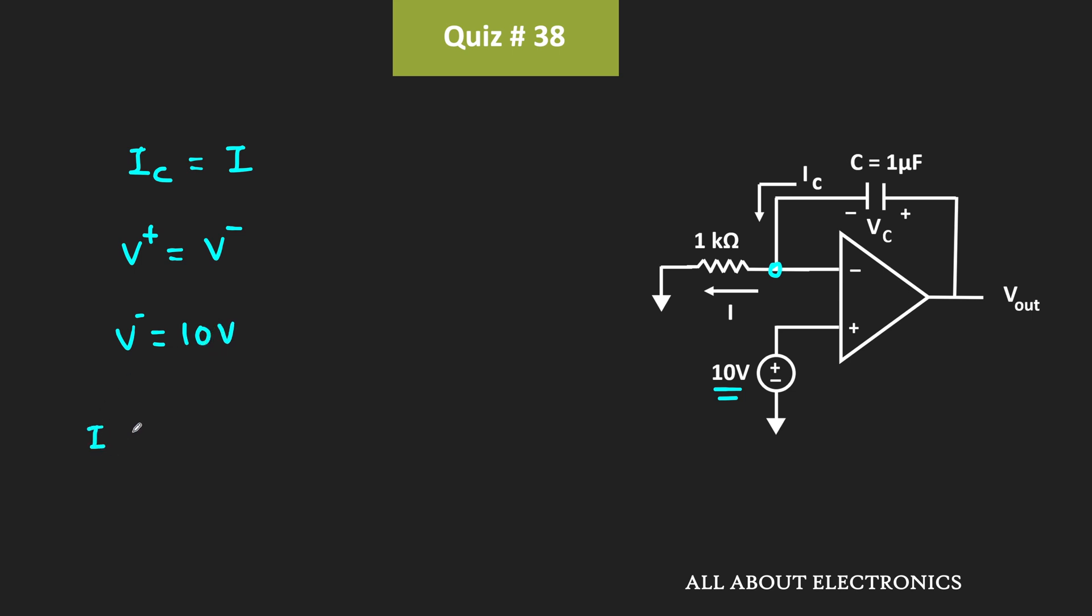This current I equals V- divided by 1kΩ, which is 10V divided by 1kΩ, equal to 10mA.